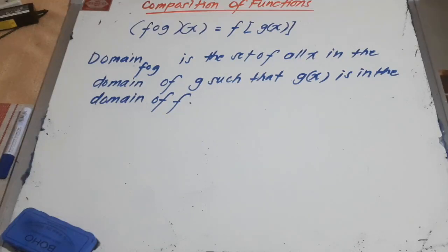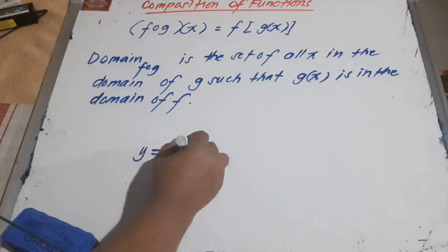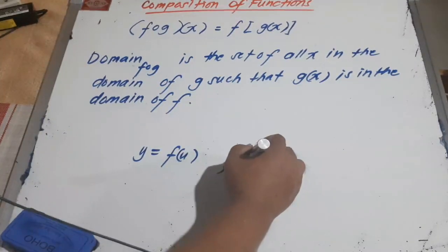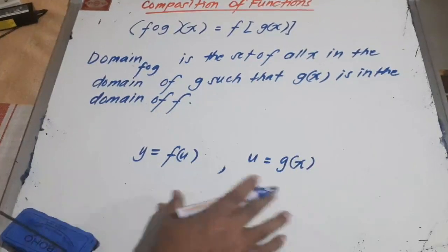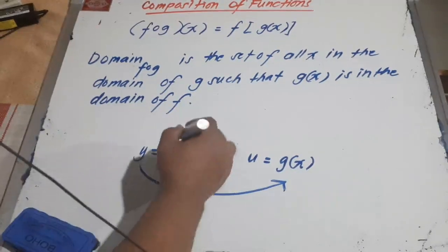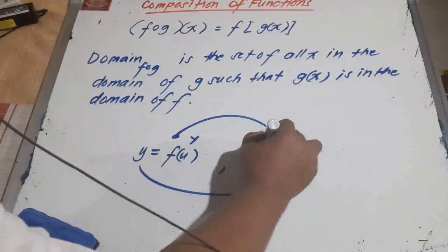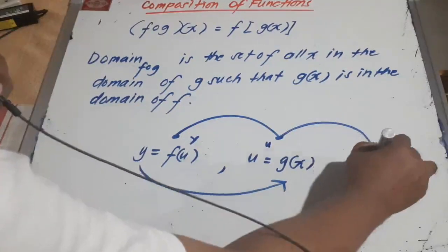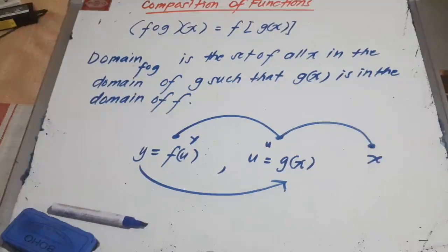How does a composite function come about? If we have y related to u — that is, y is a function of u — and then another function where u is related to x, a composite function arises when you want to establish a relationship between y and x. So y is related to u, and u is related to x.